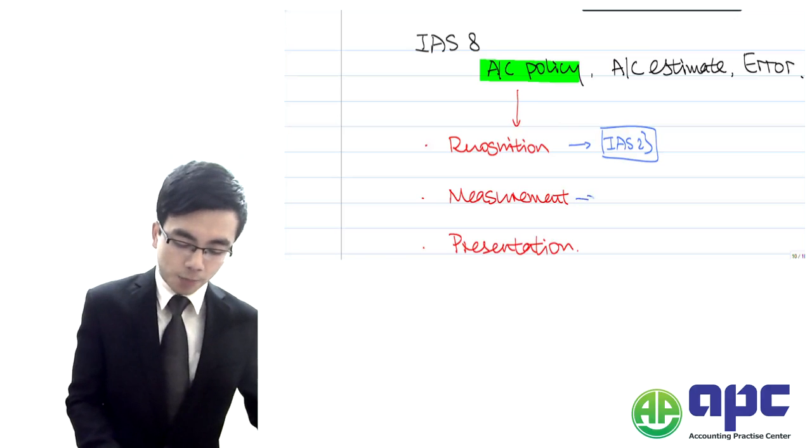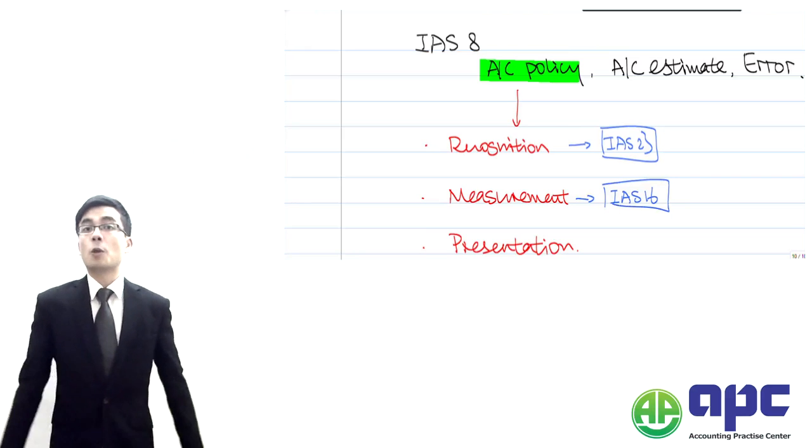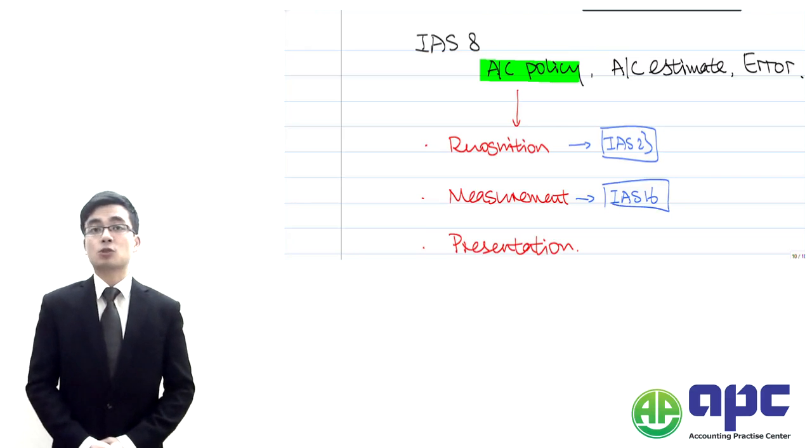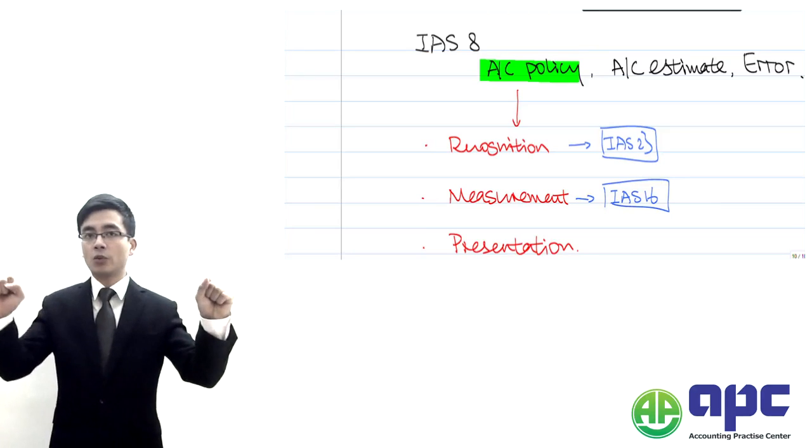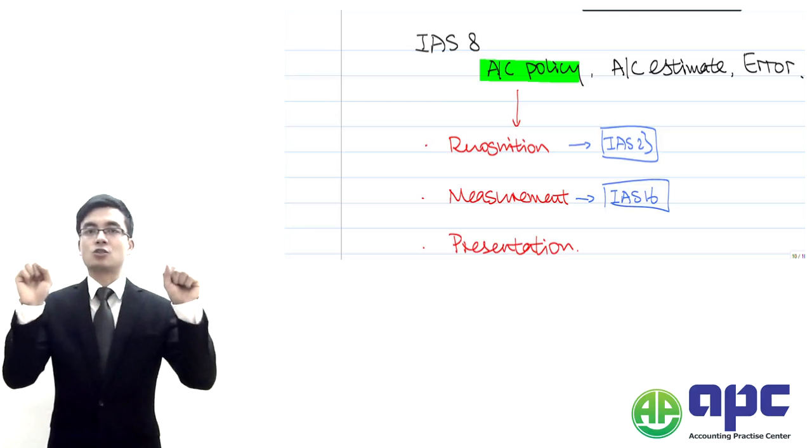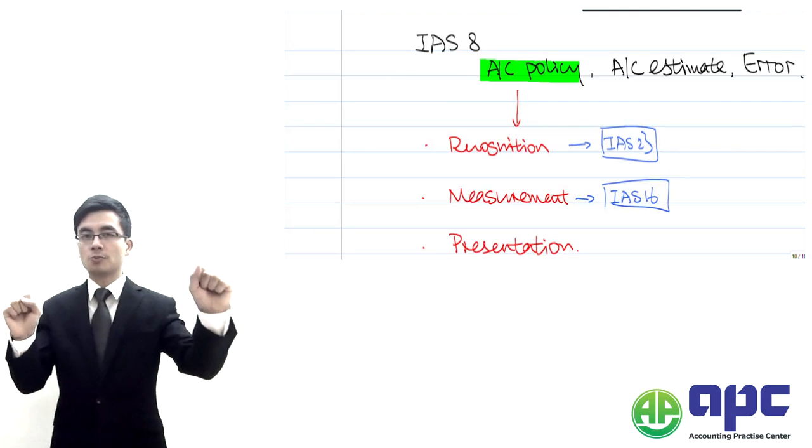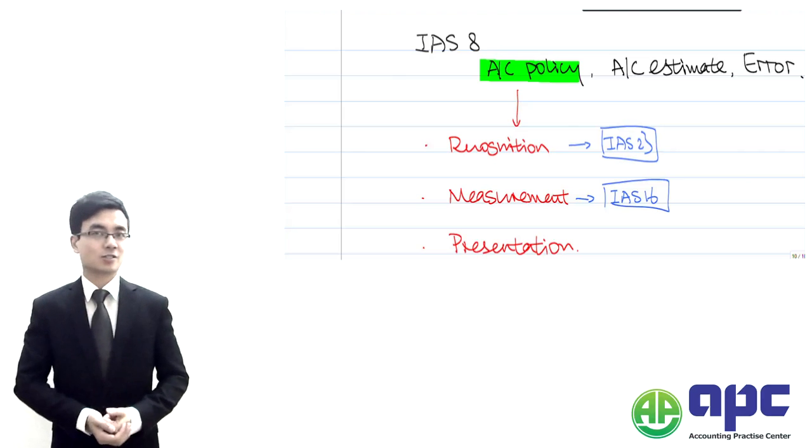Measurement, for example under IAS number 16 property, plant and equipment. For subsequent measurement we can either use the cost model or the revaluation model to measure the value of the PPE. It's your choice, either the cost model or the revaluation model. That is your accounting policy.